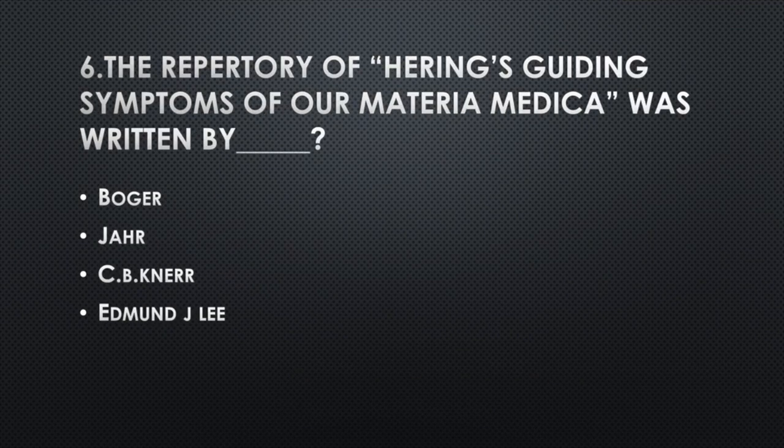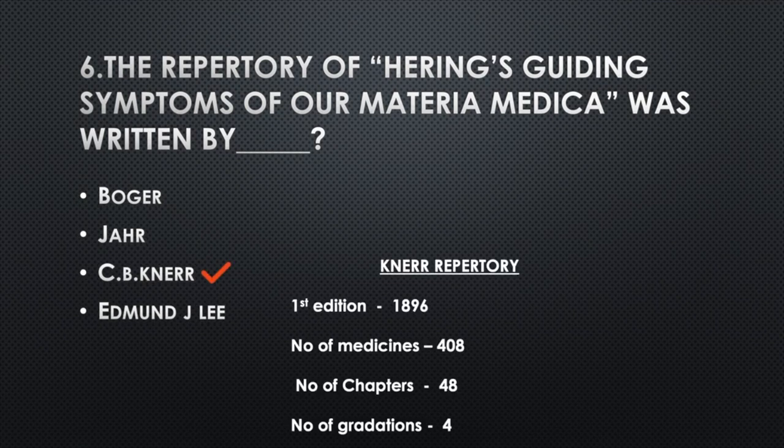The Repertory of Hering's Guiding Symptoms of our Materia Medica was first written by — Option A: Bougal, Option B: Jahr, Option C: C.B. Knerr, Option D: Edmund J. Lee. Answer: Option C, C.B. Knerr. 1st edition: 1896. Number of medicines: 408. Number of chapters: 48. Number of gradations: 4.